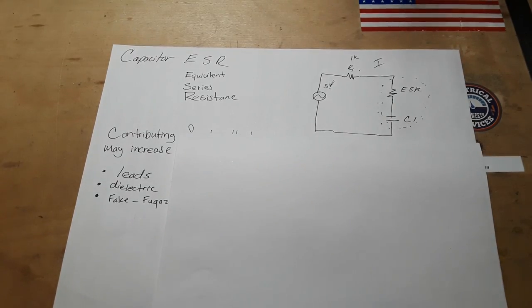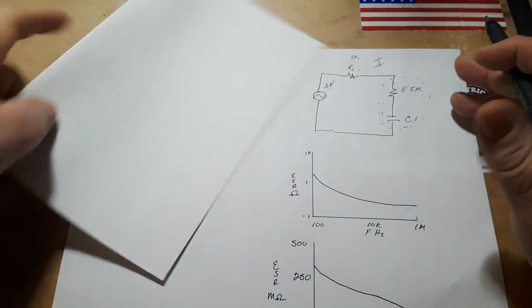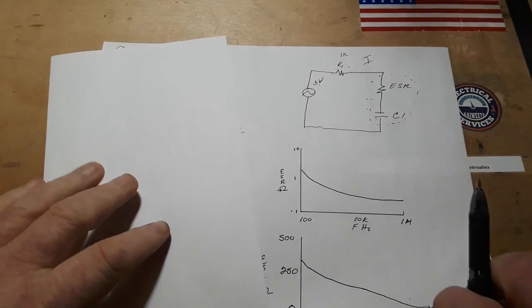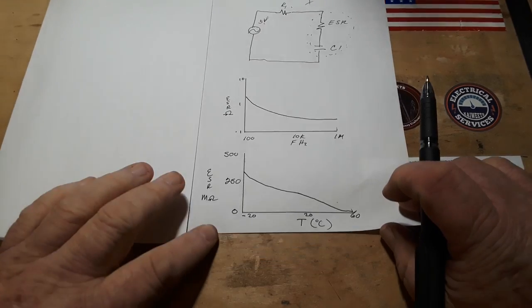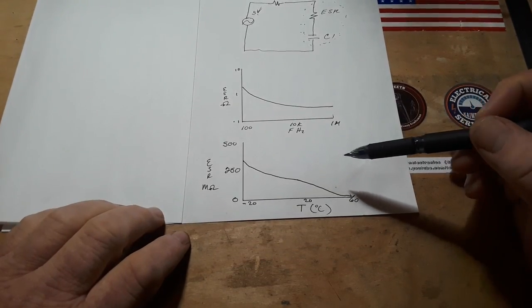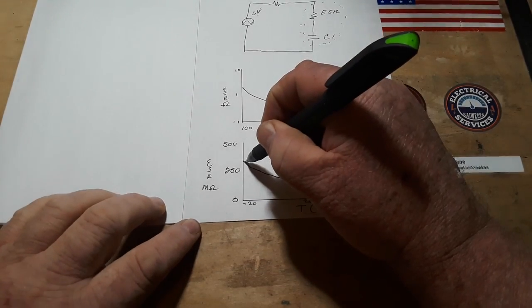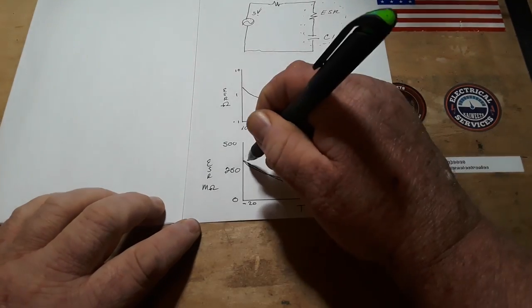ESRs are highly dependent on two things. Those two things are frequency and temperature. So let's start with temperature first. This is a very crude graph. This bump should not be here. It should be a smooth curve like that.